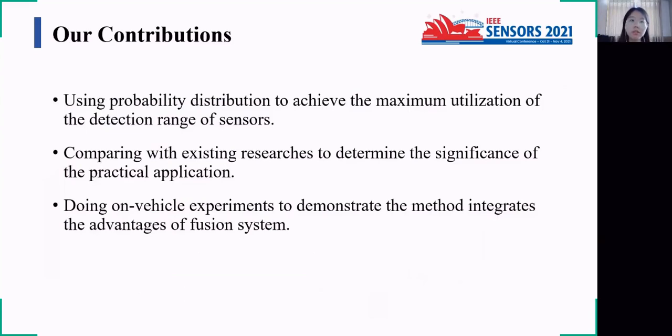There are three contributions of our work. Firstly, we used probability distribution to achieve the maximum utilization of detection range of sensors. Secondly, we compared with existing research to determine the significance of the practical application. And thirdly, we did on-vehicle experiments to demonstrate the method integrates the advantages of the fusion system.